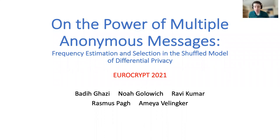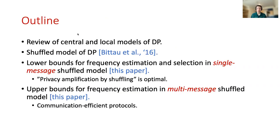I'm going to talk about our paper on the power of multiple anonymous messages, frequency estimation and selection in the shuffled model of differential privacy. This is joint work with Bhavika Z, Ravi Kumar, Rasmus Pa, and Amaya Velankar. I'm Noah Golovic. I'll begin by reviewing the central and local models of differential privacy, and then I'll discuss the shuffled model of differential privacy, which is the main topic of this talk. After that, I'll talk about our main results in the paper.